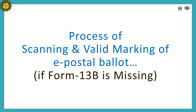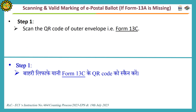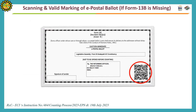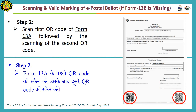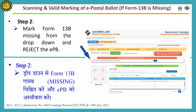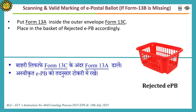Process of scanning and valid marking of E-PB if form 13B is missing. Scan the QR code of outer envelope form 13C. After opening, if form 13B is missing, scan the first and second QR codes of form 13A. Then mark form 13B as missing from the drop-down menu and reject the E-PB. Put form 13A back inside outer envelope form 13C and place it in the basket of rejected E-PB.